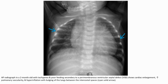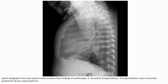This is the AP radiograph of a two-month-old with difficulty feeding secondary to a peri-membranous ventricular septal defect. The chest X-ray shows cardiomegaly, increased pulmonary vascularity, and hyperinflation with bulging of the lung between the interlobar spaces. The lateral radiograph of the same patient also demonstrates cardiomegaly, increased vascular markings, and hyperinflation due to bronchial compression and poor lung compliance.